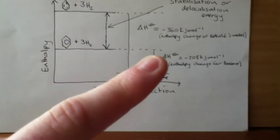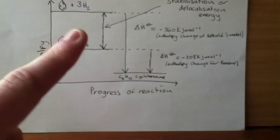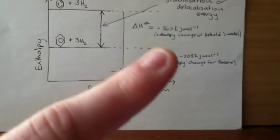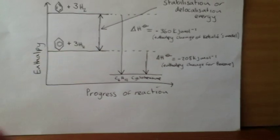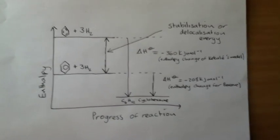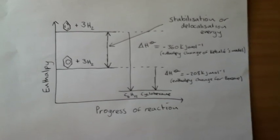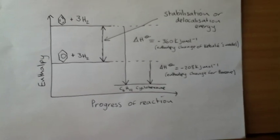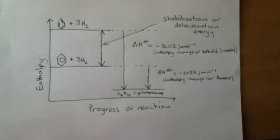Whereas the enthalpy of formation from cyclohexane is a lot bigger. 360 there and only 208 to benzene. This shows that Kekule's model was nowhere near as stable as benzene. And this is further evidence that Kekule's model wasn't right.